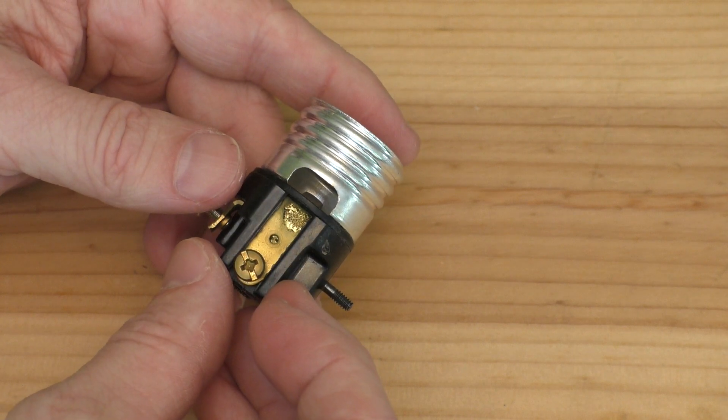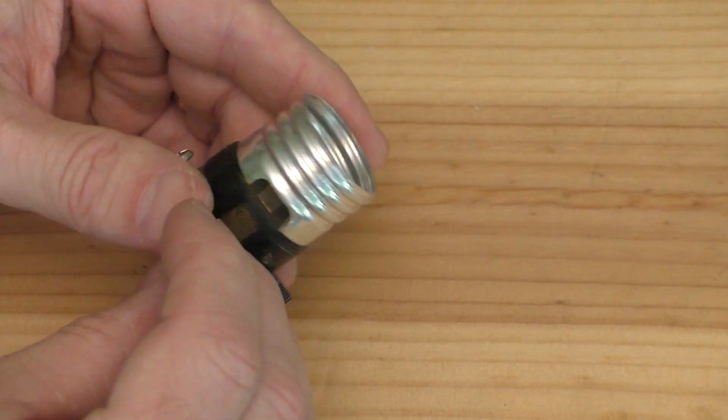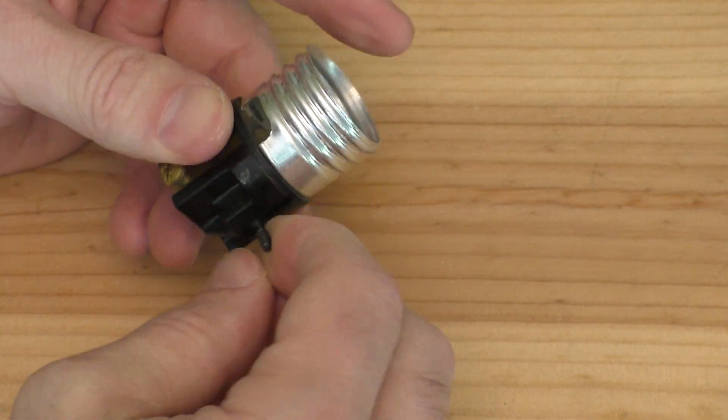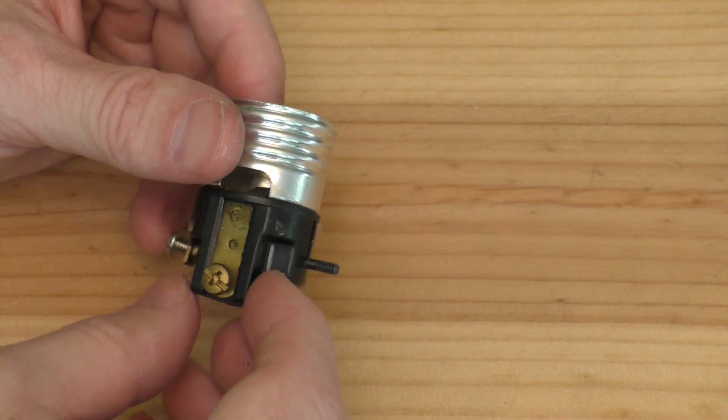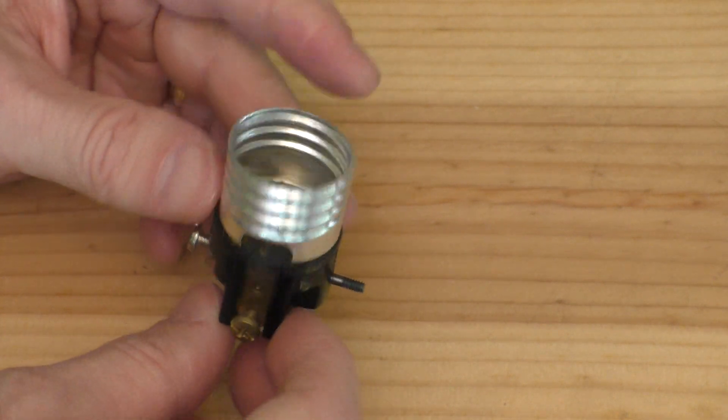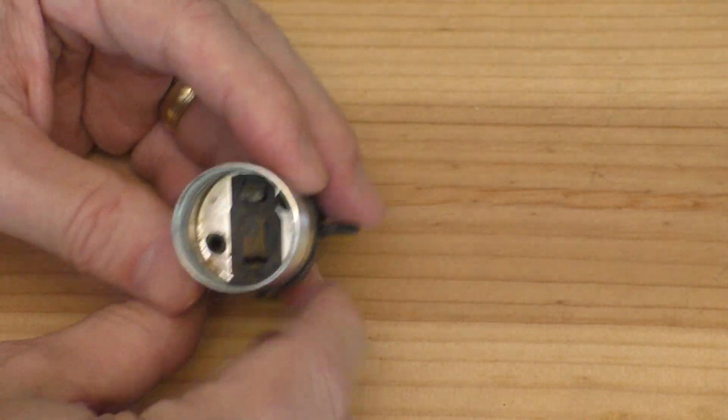I replaced it with a working one, but I figured I'm curious about the anatomy of this thing. So this is where you twist to turn it on and off, and I was wondering, let's try to open this up and see how it ticks.